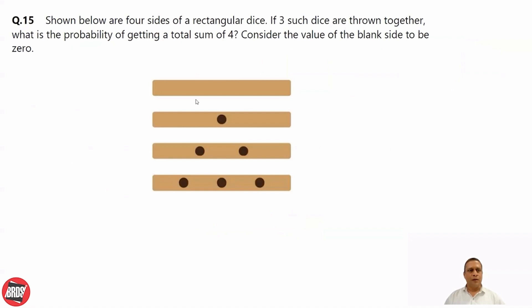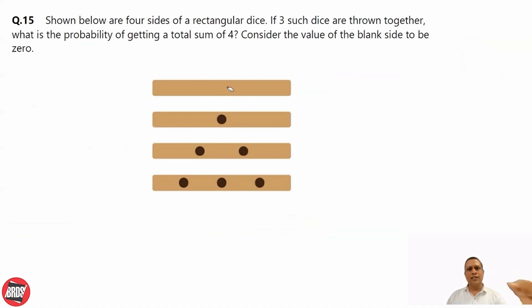Now, this question: shown below are four sides of the rectangular dice — rectangular means cuboid, cuboidal shape. So this is a single dice and its four sides are given by these numbers: one side is completely blank which represents zero, one side is having one, another two, another three. There are three such dice, they are thrown together. And they are asking: what is the probability of getting a total sum of four?